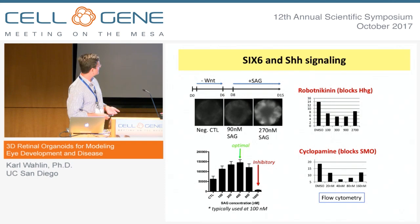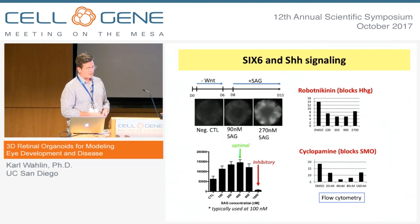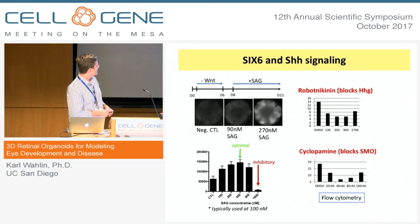We were also able to use this system to test other microenvironment conditions — for instance, hedgehog signaling, which we use routinely to upregulate SIX6 expression and general retinal induction. We wanted to test whether the concentrations we were using were optimal. Based on the literature, using 100 nanomolar would give less signal than what we currently use, suggesting that 3D organoids behave a little bit differently than 2D cultures.